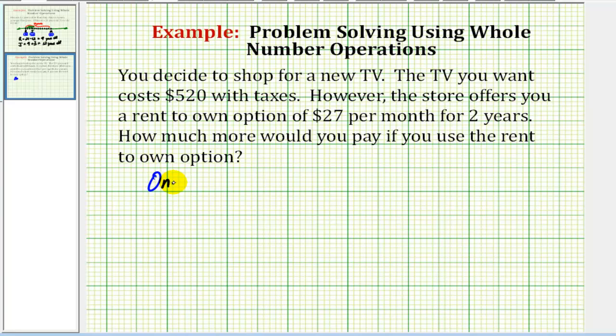So the one time purchase price is $520. The rent to own option is $27 per month for two years.